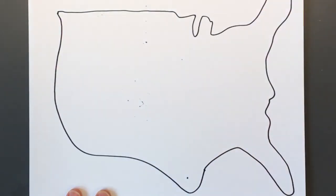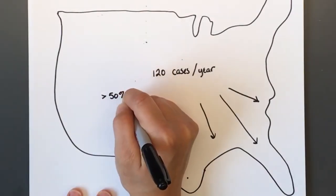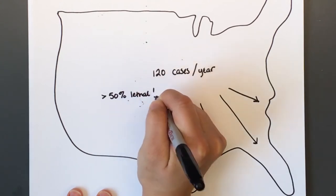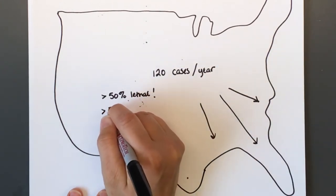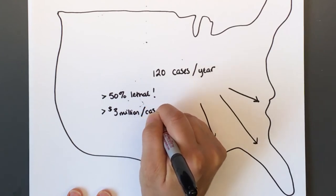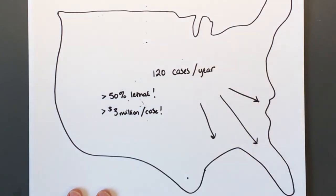Right now there are only about 120 cases of Vibrio vulnificus in the United States each year, so that's really not many, right? The problem is they're lethal in more than 50 percent of cases and each case costs the United States more than three million dollars in economic burden due to combined medical costs, productivity loss, and death.